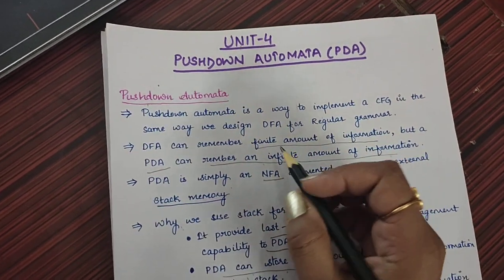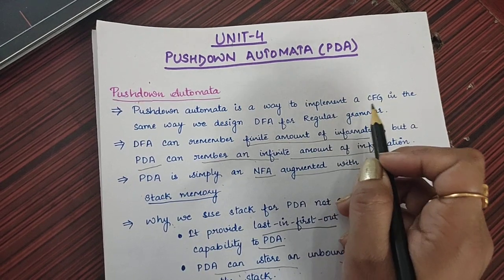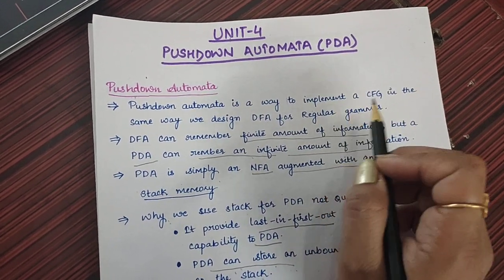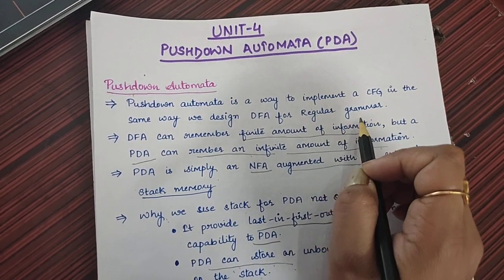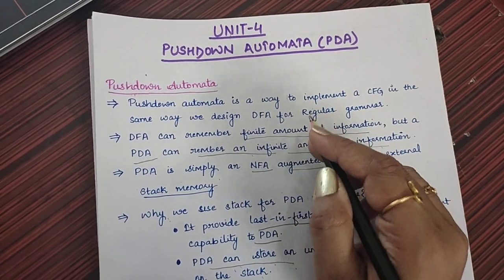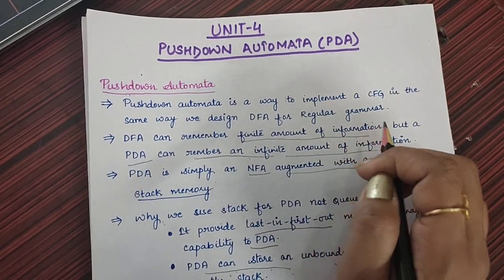What is it? Pushdown automata is used to implement context-free grammars. That is, we can design transition diagrams for context-free grammar as well, like we did it for regular grammar. If regular grammar is given to us, we can design deterministic finite automata using right linear grammar or left linear grammar.